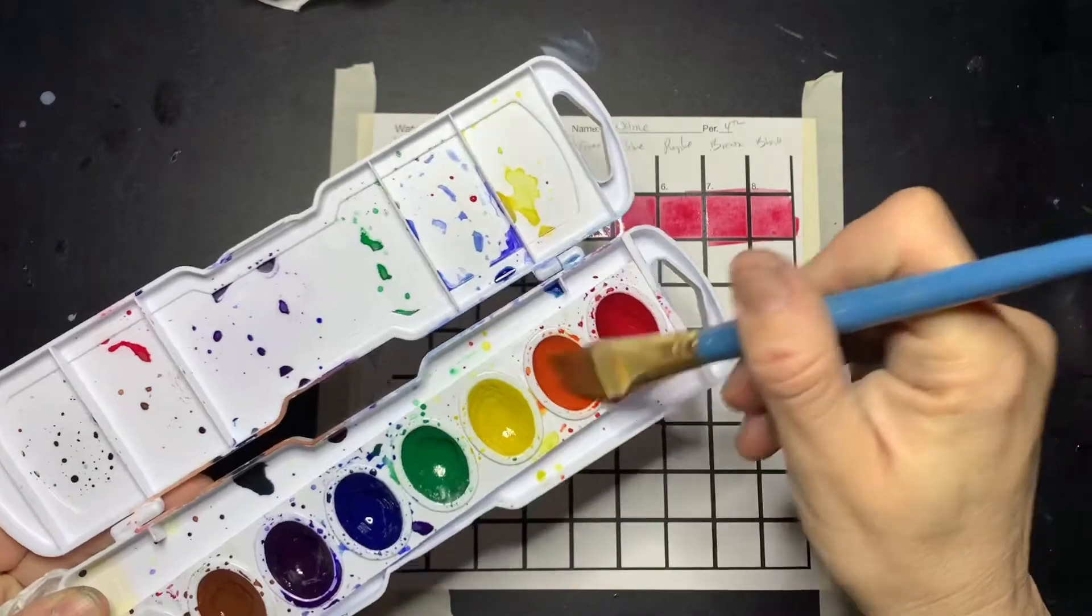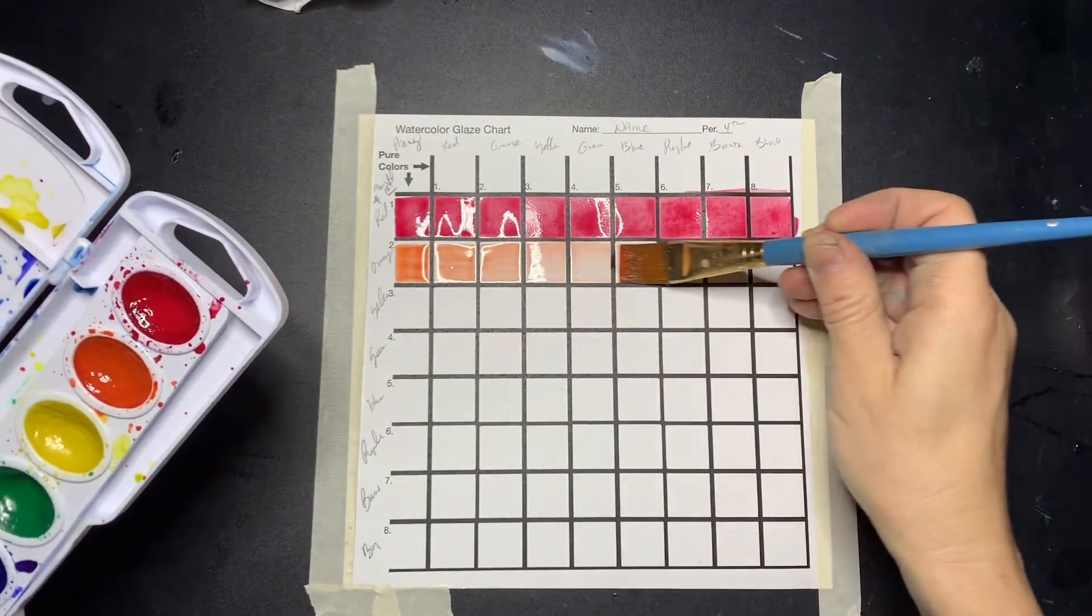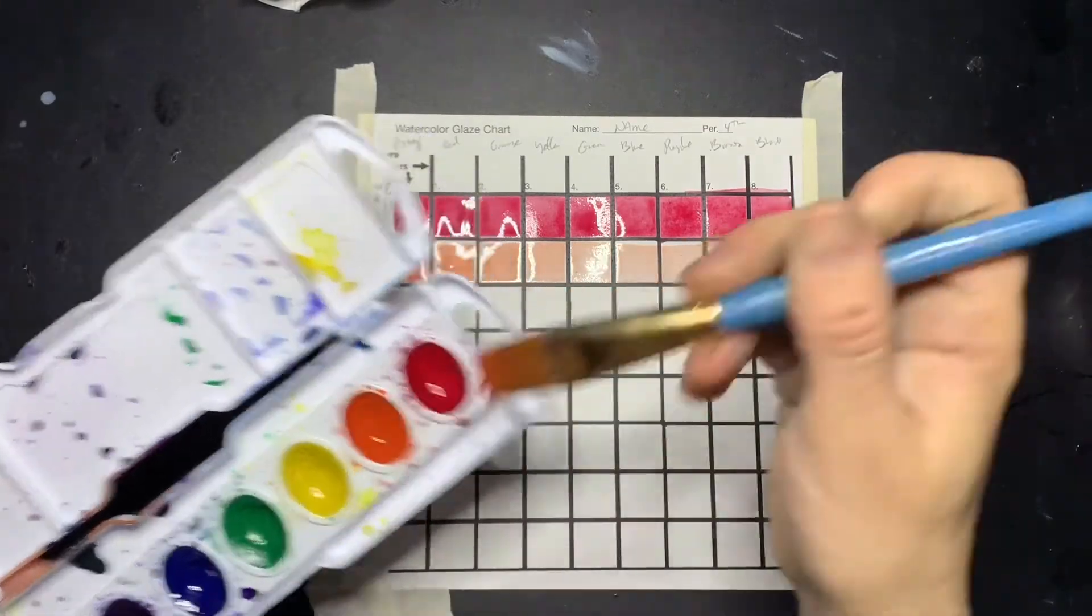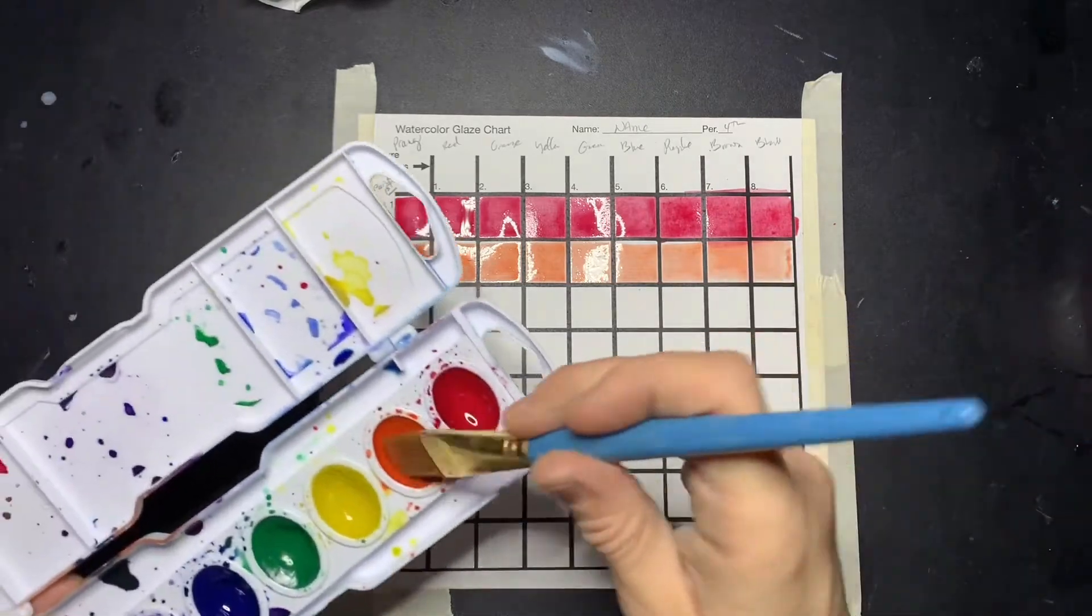Then wash out your brush and do a swipe of the second color. You may run out of paint as you go—that's okay, just add more and keep going. Do not scrub. Just make a swipe.